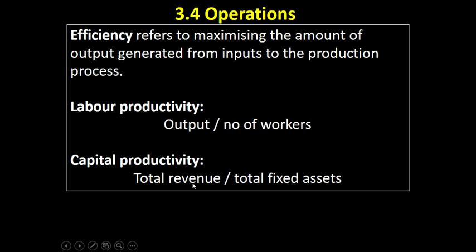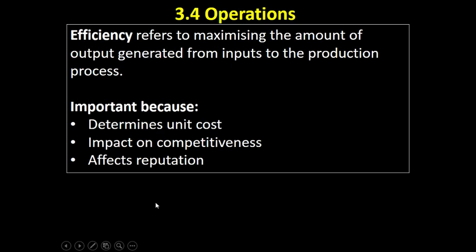The more efficiently the school uses these resources, hopefully the better the output will be. From a previous video, labor productivity is output divided by number of workers, giving you the average produced by each worker in a time period. We can also calculate capital productivity by dividing total revenue by the total amount invested in fixed assets, which can be found on the balance sheet.